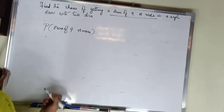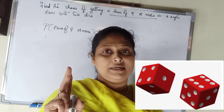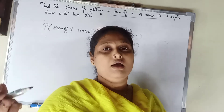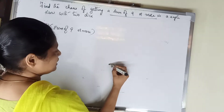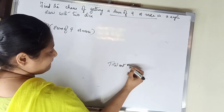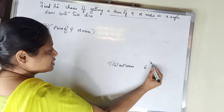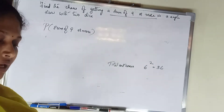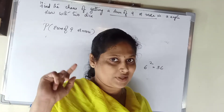How many dice are there? 2 dice. When you roll 2 cubes, how many total outcomes are there? For 2 dice, each die has 6 outcomes, so it is 6 squared, which is 36. 6 raised to 2, that is 36.